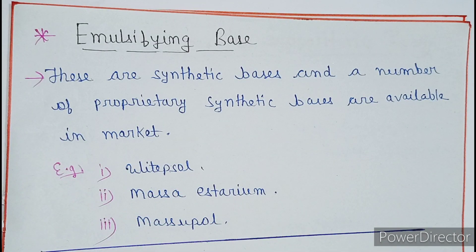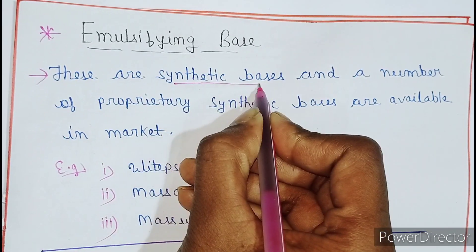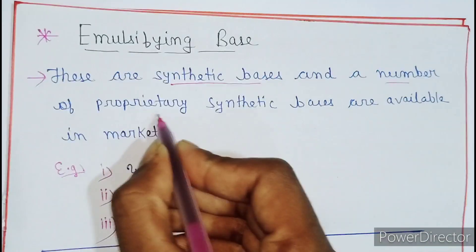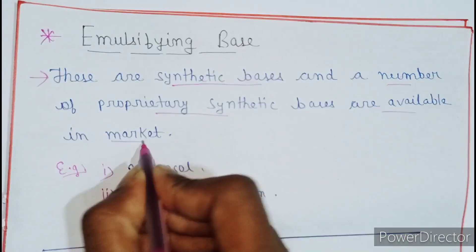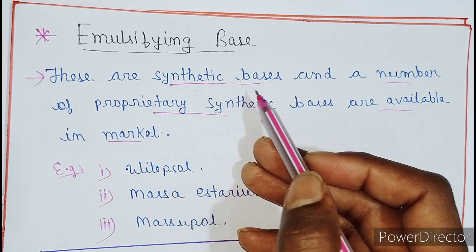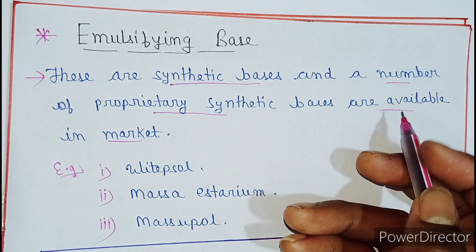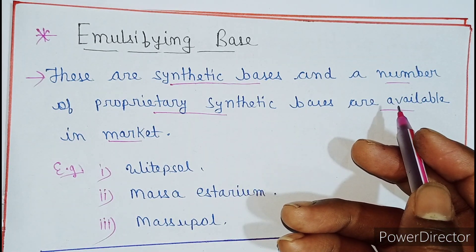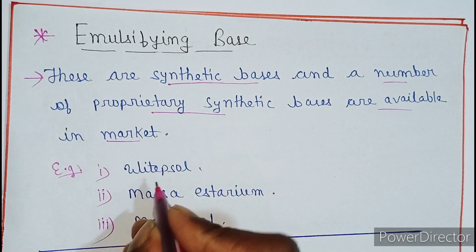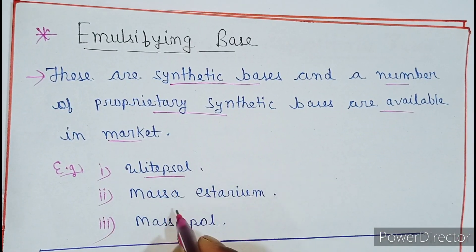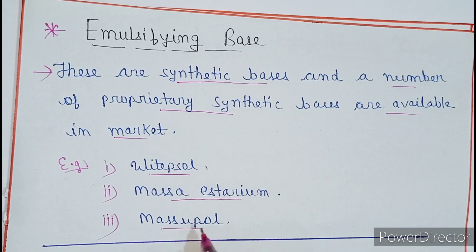The next one is emulsifying bases. These are synthetic bases, and a number of proprietary synthetic bases are available in the market. Examples of emulsifying bases are: white salt, massetrium, and mesopole.